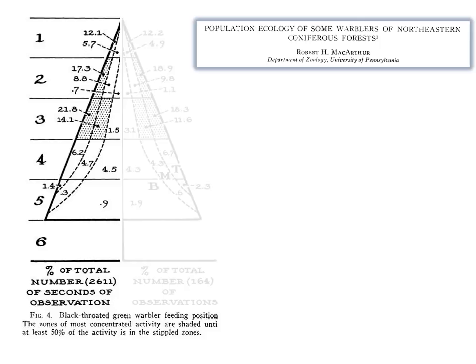The most concentrated activity was shaded until at least 50% of the activity was marked, so you can see here that this species spent the majority of its time 40 to 50 meters above the ground, foraging primarily on branches with new needles.